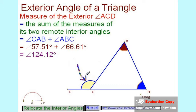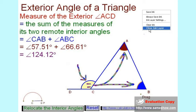ACD is equal to the sum of the measures of angle CAB and angle ABC.